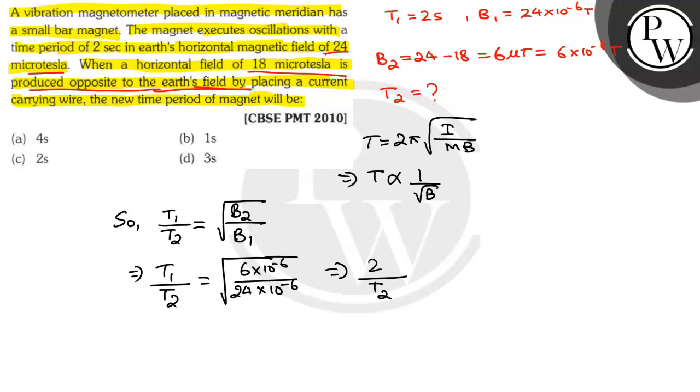2 by T2 is equal to root over 1 by 4, or T2 is equal to 2 into 2 which is equal to 4 seconds. Hence, the new time period of the magnet will be 4 seconds which is option A.